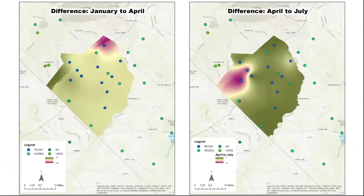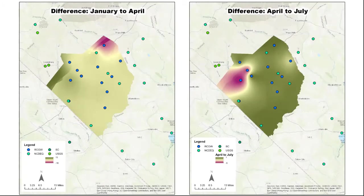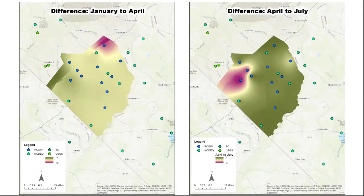We can also look at differences between different months. On the left we have the difference in water elevations between January 2020 and April 2020. The darkest green areas represent a rise in water levels of 13 meters, and we also have areas where water is going down 13 meters — quite significant when we're talking about meters as opposed to feet. Between April and July we get much more of what we expect, with values ranging from up one meter to down five meters, and we can see that the rise from January to April correlates heavily with those areas that dropped from April to July.